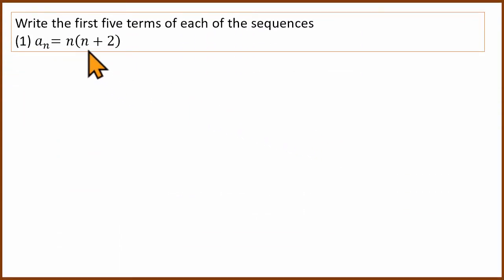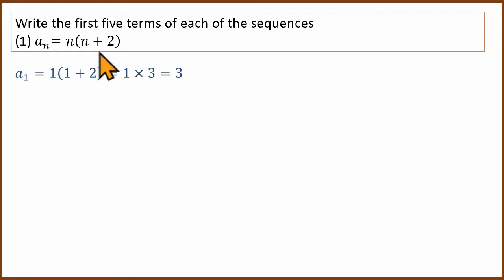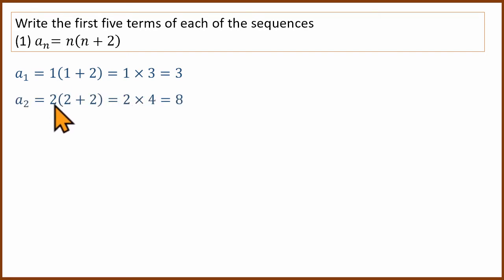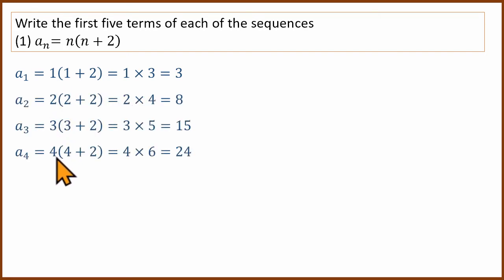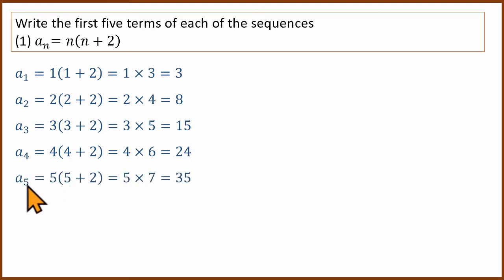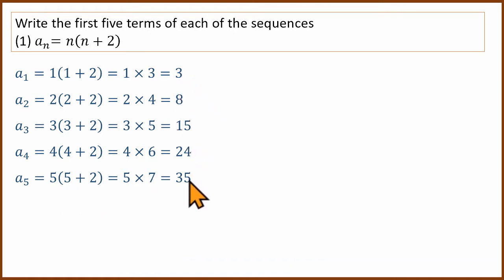Write the first five terms of each of the sequences. The formula is aₙ = n multiplied by (n + 2). We substitute n = 1, 2, 3, 4, 5 and get the answers: 3, 8, 15, 24, 35.